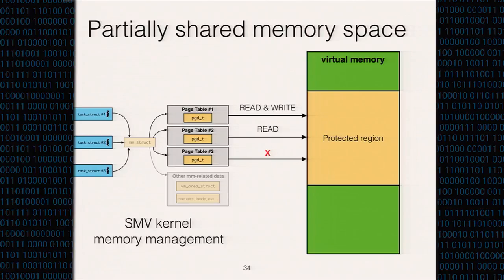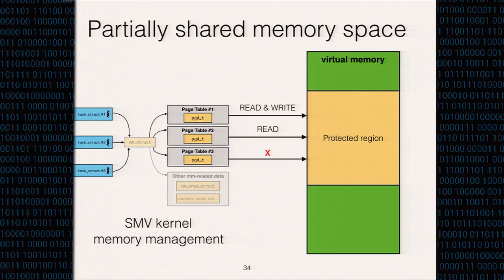This partially shared memory space has several benefits. It allows legacy thread synchronization that utilizes MM struct in the kernel to continue to work with SMV seamlessly. It also allows debugging tools such as Valgrind to attach to an SMV program. We don't use the clone syscall to create a completely different process address space, which would break the single process address space assumption for debugging tools like Valgrind or GDB. And most importantly, sharing the same MM struct avoids many kernel synchronizations for MM-related data structures.